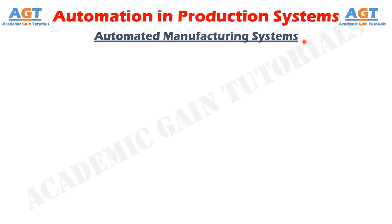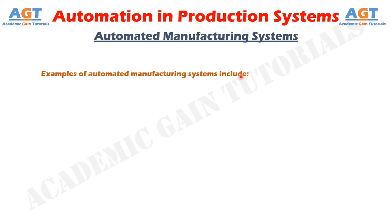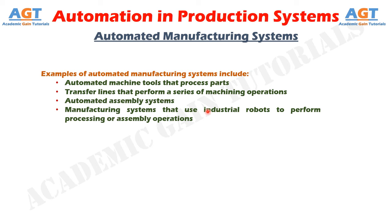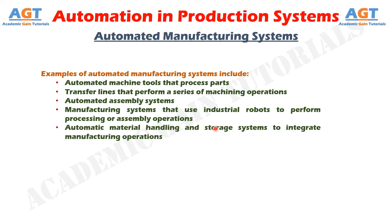They are called automated because they perform their operations with a reduced level of human participation compared with the corresponding manual process. In some highly automated systems, there is virtually no human participation. Examples include automated machine tools that process parts, transfer lines that perform a series of machining operations, automated assembly systems, manufacturing systems that use industrial robots, automatic material handling and storage systems, and automatic inspection systems for quality control.